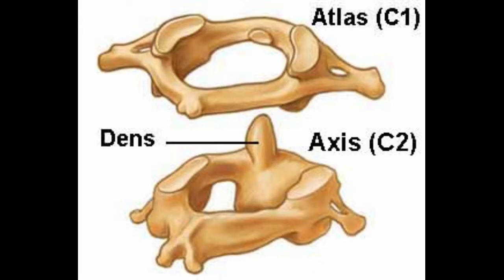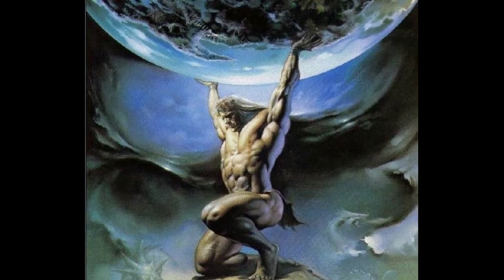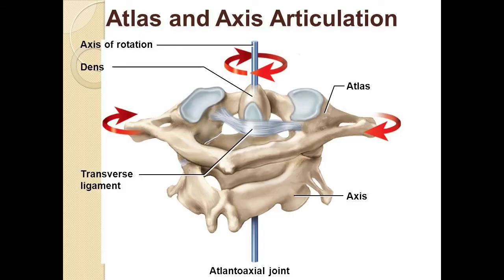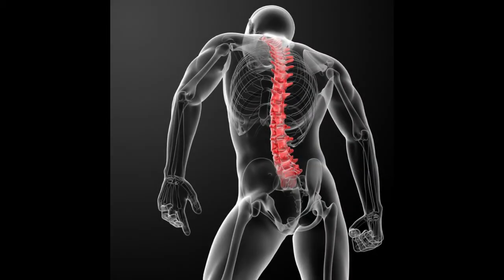The atlas and axis are the most specialized vertebrae. As the names denote, the atlas vertebrae — from the Greek god that holds up the world — holds up and supports the structure of the skull. The axis vertebrae allows rotating articulation of the head.